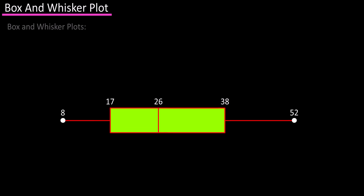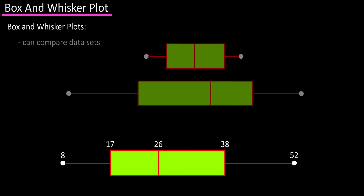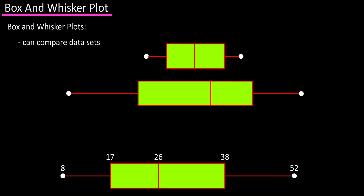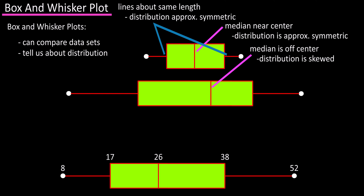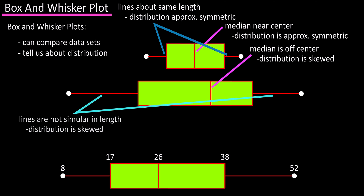Box and whisker plots can compare data sets to one another, and they can also tell us about the distribution of the data. If the median is near the center of the box, the distribution is approximately symmetric. If the median falls to the left or right of the center, the distribution is positively or negatively skewed. Similarly, if the whisker lines are about the same length, the distribution is approximately symmetric; if one side is longer, it is positively or negatively skewed.